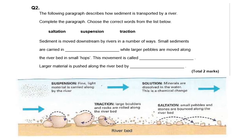Question two: choose three words from the list below. It's always worth, if you get these word-fill ones, reading past the gap to make sure the next sentence doesn't alter what you're writing. The second sentence might make it easier to work out the first. Sediment is moved downstream by rivers in a number of ways. Small sediments are carried in suspension, while larger pebbles are moved along the riverbed in small hops called saltation, and larger material is pushed along the riverbed by traction. If you don't know those terms, you're not going to be able to access the question.